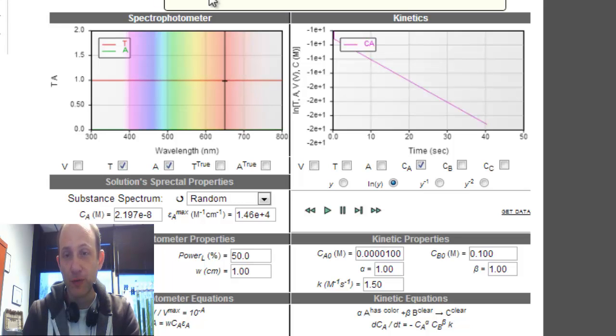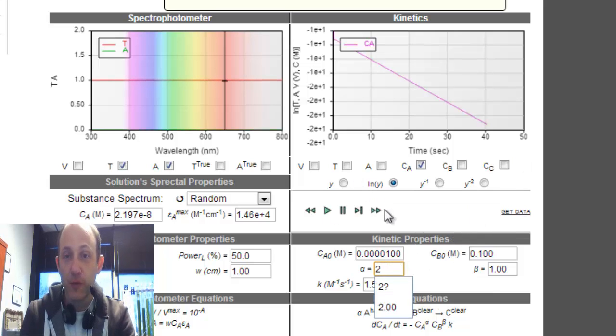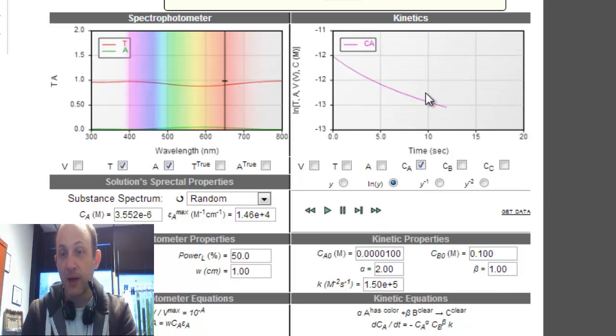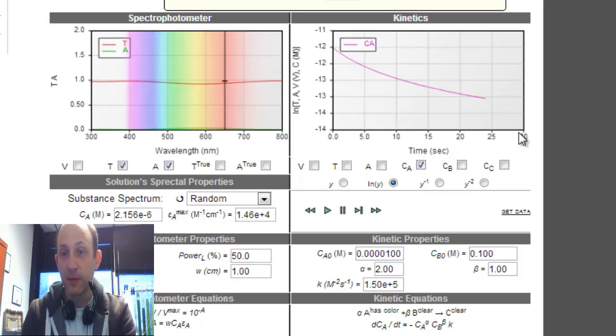I will just show you what it looks like. If alpha was 2, I'm going to need to increase the rate. But if alpha is 2, and I run this reaction, and I plot the log, it's no longer going to be a linear plot, right?